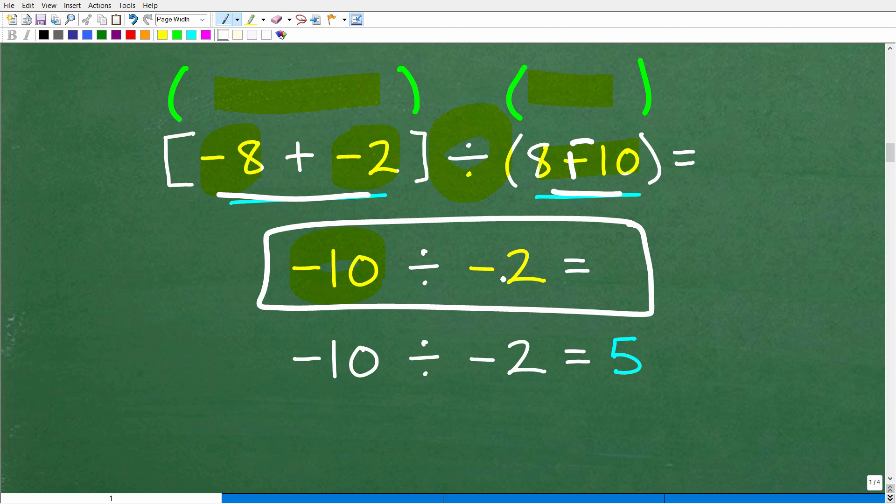A negative divided by a negative is a positive. So negative 10 divided by negative 2 is a positive 5. This is stuff that many of you learned a long time ago. So don't feel bad if you didn't get this right.